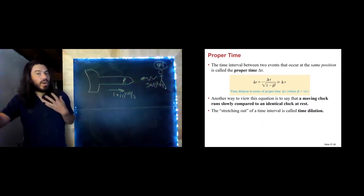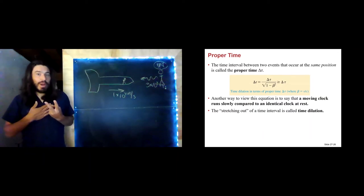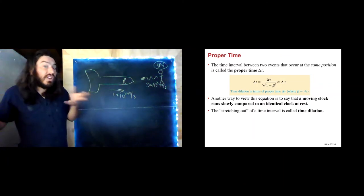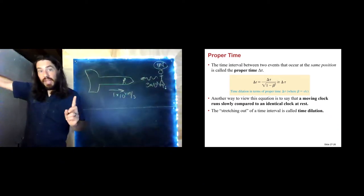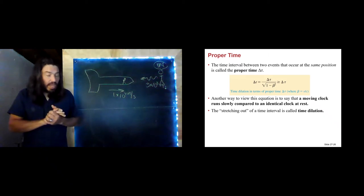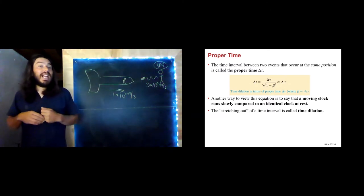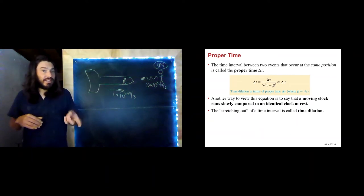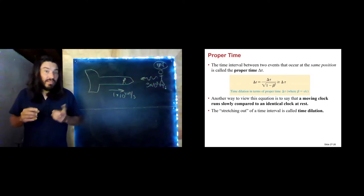Going back to the cat video: if I'm sitting there watching it on my computer, the two events are 'cat video starts' and 'cat video ends,' both happening at the same location. Therefore, I measure the proper time — three minutes. But my friend who is on Earth while I'm on my spaceship does not measure the proper time because the beginning and end of the cat video happen at different locations for them. The person not measuring the proper time always measures a larger value — about seven minutes in my example.